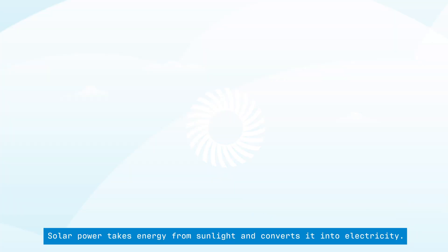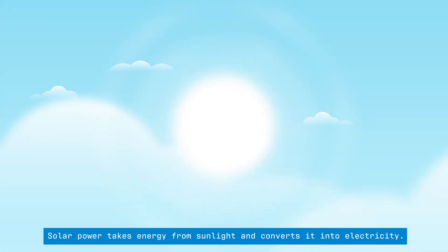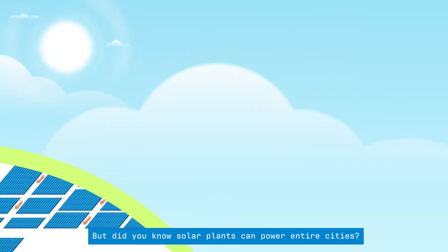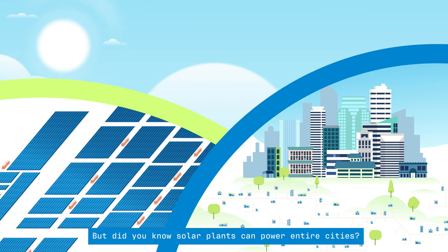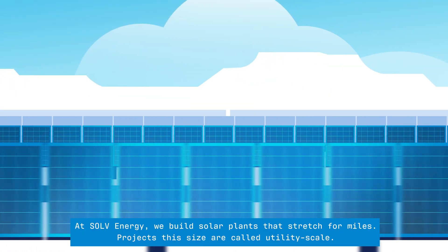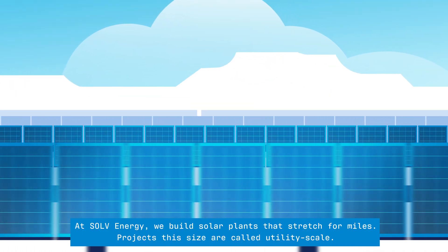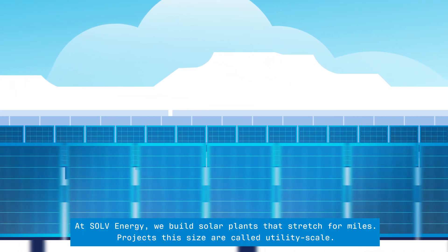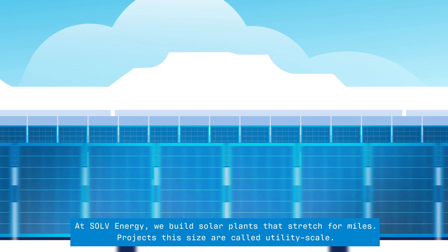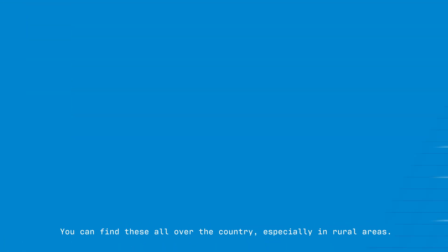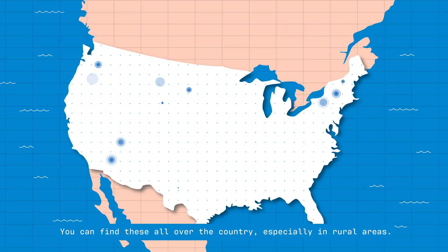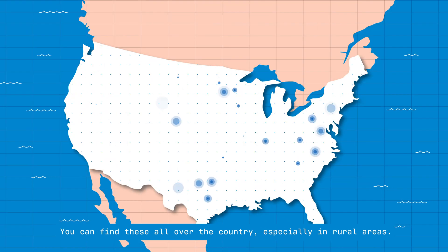Solar power takes energy from sunlight and converts it into electricity. But did you know solar plants can power entire cities? At Solve Energy, we build solar plants that stretch for miles. Projects this size are called utility scale. You can find these all over the country, especially in rural areas.